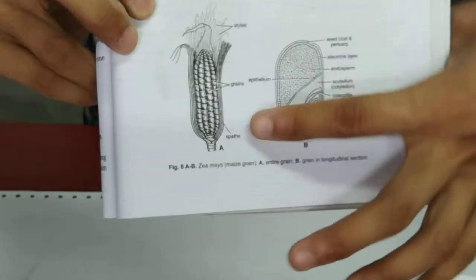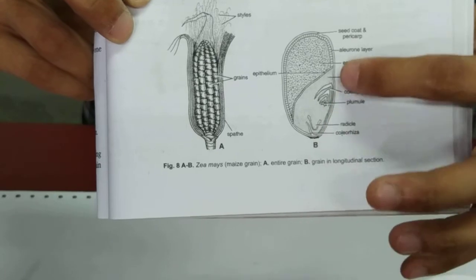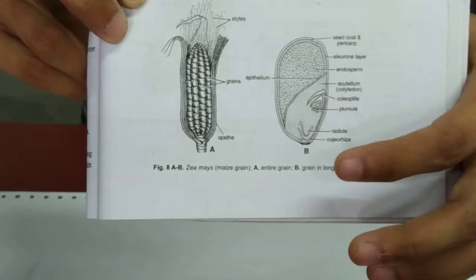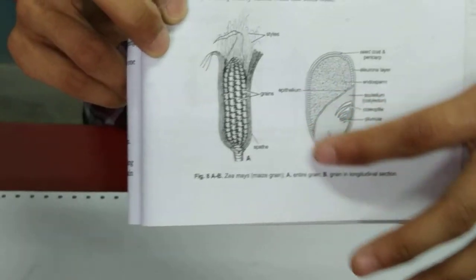So under a microscope this is what you are supposed to see. I have already shown you the plumule and the radicle. These two portions over here which can slightly be observed. Look under the microscope more clearly, you can see this entire structure.